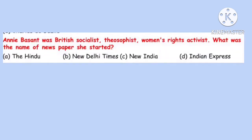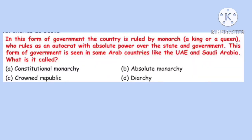Question 16. Annie Besant was a British socialist, theosophist, and women's rights activist. What was the name of the newspaper she started? Correct option is C: New India.